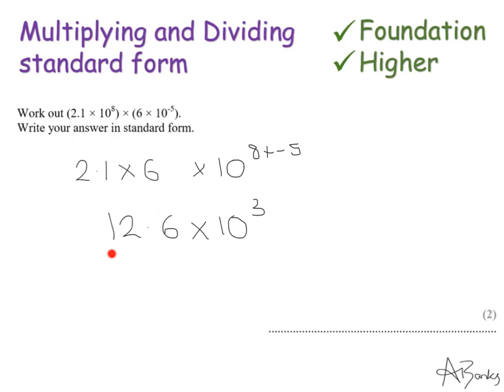And it's not quite yet. So if I divide this number by 10, I get 1.26. That gives me a number between 1 and 10. I will have to multiply my power by 10, which means raising my indices by 1. So that is my final answer. I get 1.26 times 10 to the power of 4.